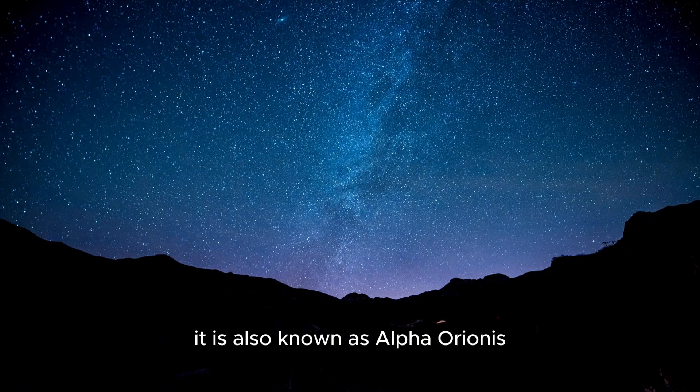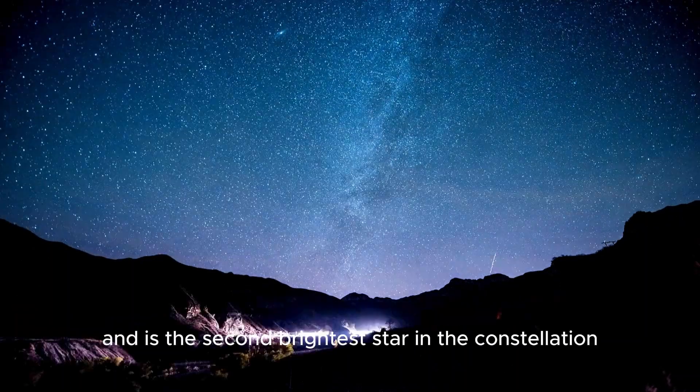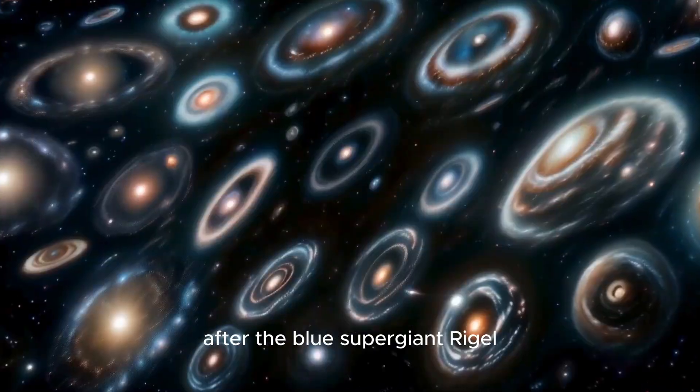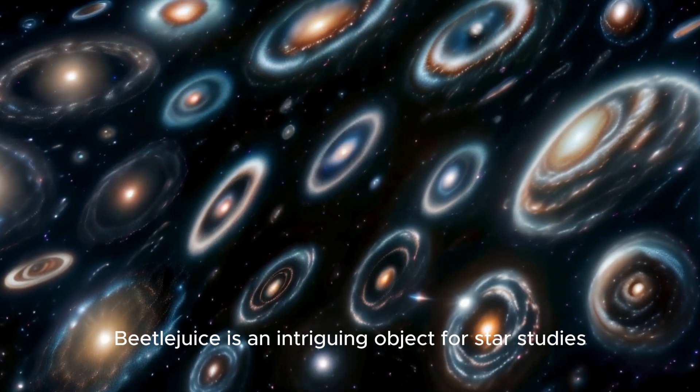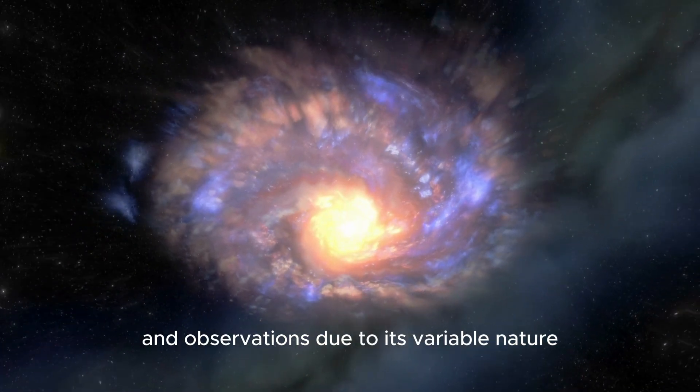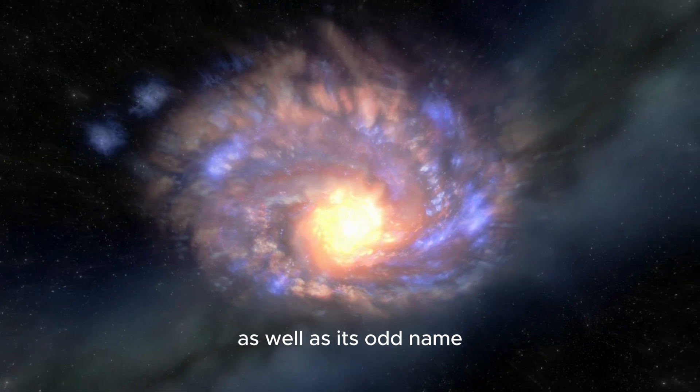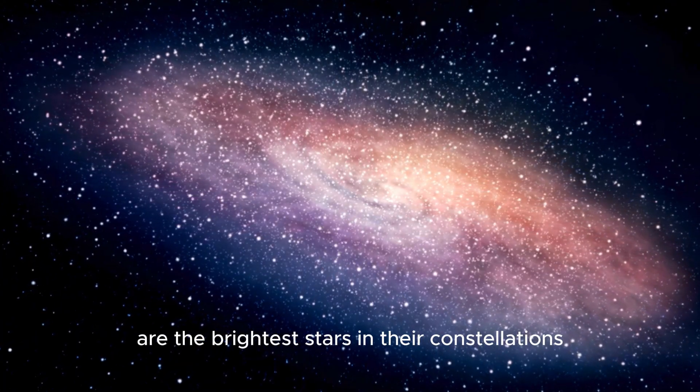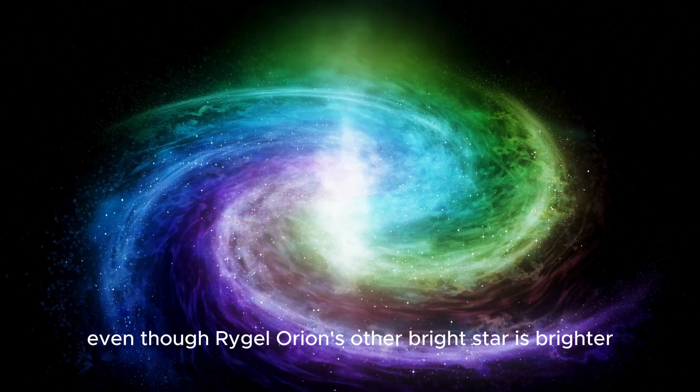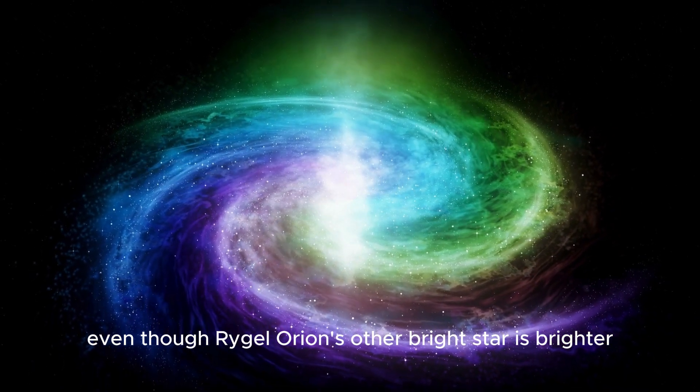It is also known as Alpha Orionis and is the second brightest star in the constellation after the blue supergiant Rigel. Frequently, stars with the name Alpha are the brightest stars in their constellations, even though Rigel, Orion's other bright star, is brighter.